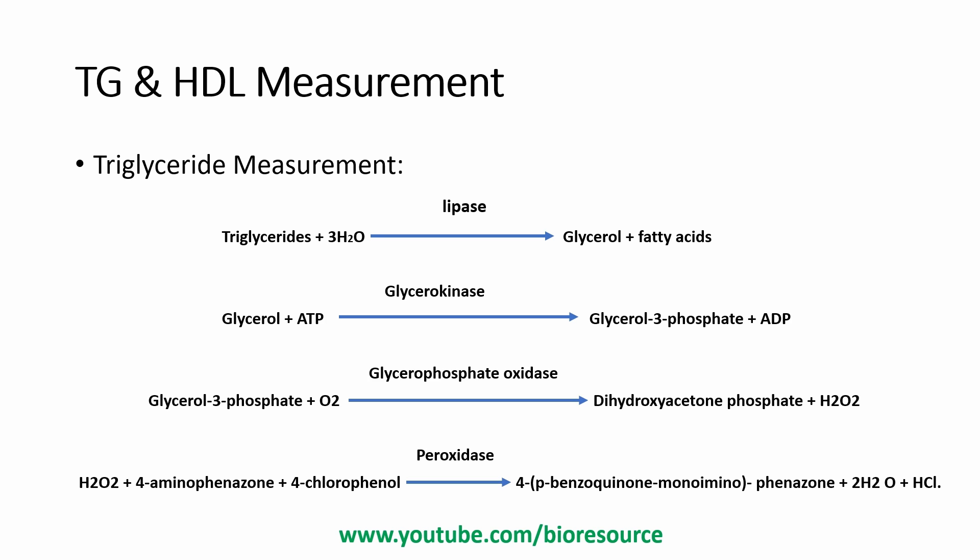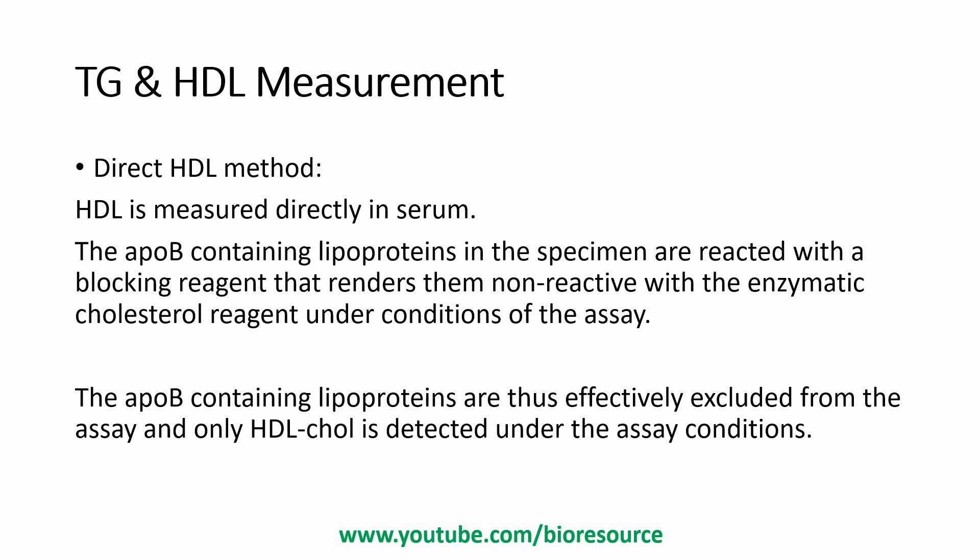Now we will see how to measure triglycerides and HDL. For triglyceride measurement, a multi-step process is involved: triglycerides are converted into glycerol and fatty acids using the enzyme lipase; glycerol is converted into glycerol-3-phosphate using glycerokinase; and glycerol-3-phosphate is converted into dihydroxyacetone phosphate using glycerol phosphate oxidase. This then reacts with a chromogen along with hydrogen peroxide to give a colored compound measurable spectrophotometrically. For HDL, the apoB-containing lipoproteins in the specimen are reacted with a blocking reagent that renders them non-reactive with the enzyme cholesterol reagent, effectively excluding them from the assay so that only HDL cholesterol is detected.